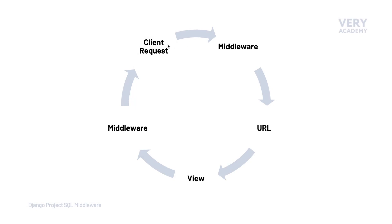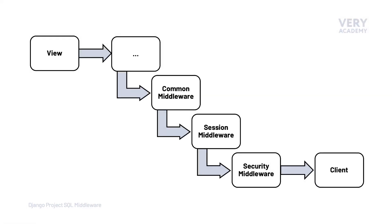After the view has been rendered or executed, the request now returns a response. The response from the view is then passed back through the middleware, which is then sent back to the client. So here we have just the opposite process — we start from the view, pass back through the middleware, and back to the client.